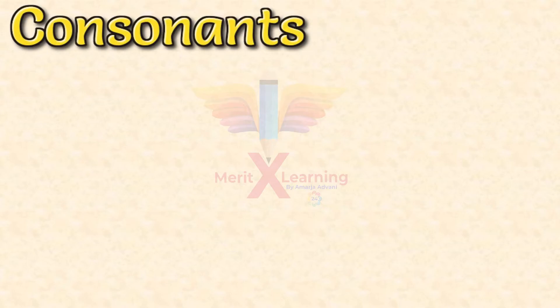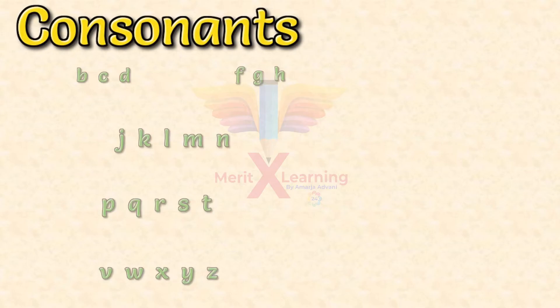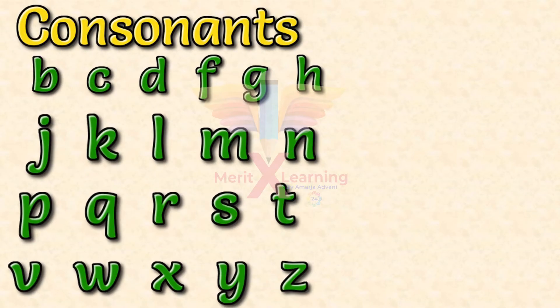Alright, so the consonants are B, C, D, F, G, H, J, K, L, M, N, P, Q, R, S, T, V, W, X, Y, and Z.